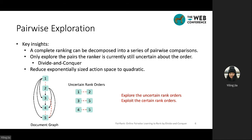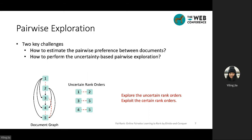This reduces the exponentially sized action space to quadratic. However, this also leaves us two key challenges: how to estimate the pairwise preference between documents, and how to perform the uncertainty-based pairwise exploration.